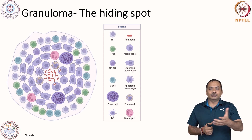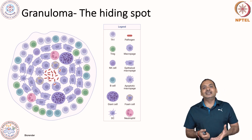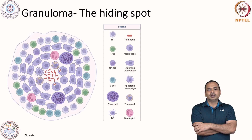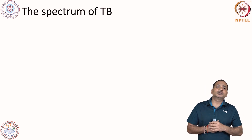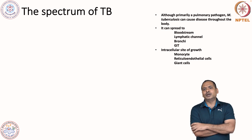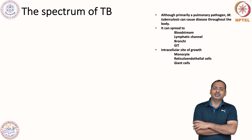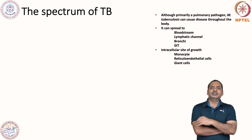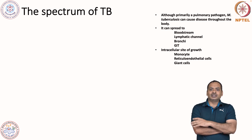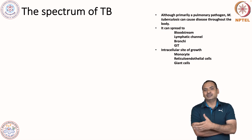Here you can see the structure of the granuloma with giant cells containing many mycobacteria, foam cells, dendritic cells, and neutrophils — this is the gross structure of a granuloma. Although primarily a pulmonary pathogen, Mycobacterium tuberculosis can cause disease throughout the body. It can spread to the bloodstream, lymphatic channels, bronchi, gastrointestinal tract, and intracellular sites of growth including monocytes and reticuloendothelial cells, where they can form giant cells.